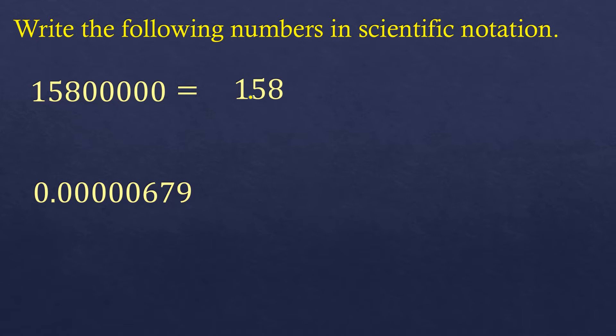We're going to put times 10. That's how you write a standard number into scientific notation — times 10 raised to the power of how many times we moved the decimal point. We moved it 7 times, so it's times 10 to the power of 7. That's the scientific notation of 15,800,000: it's 1.58 times 10 to the power of 7.